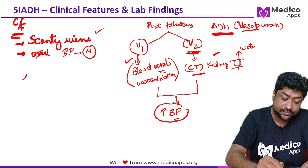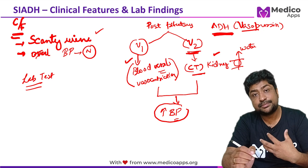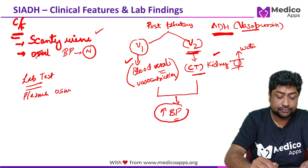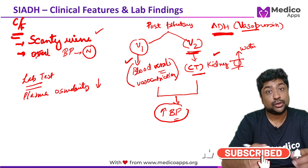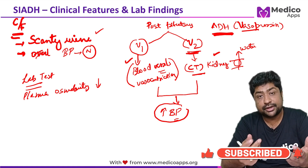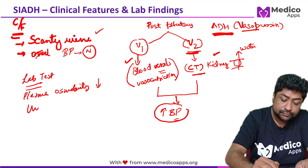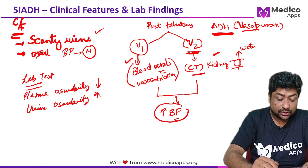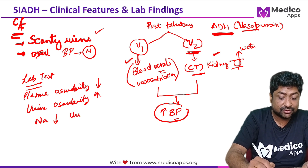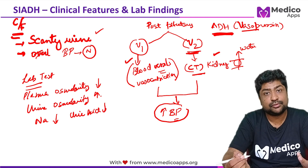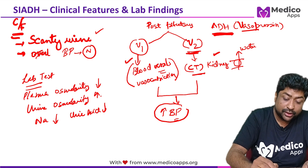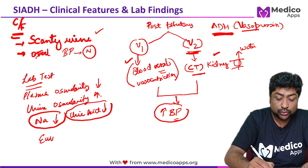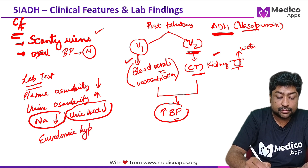When we do lab tests in SIADH, because water has been retained, there will be dilution of the plasma. So plasma osmolarity will be decreased. Urine is very concentrated because water has been removed from the urine, so urine osmolarity will be increased. Because of water retention, sodium levels will fall down, uric acid levels will fall down, and sometimes potassium may also fall due to dilution. Very importantly, sodium and uric acid levels will be falling down. This is what we call euvolemic hyponatremia.